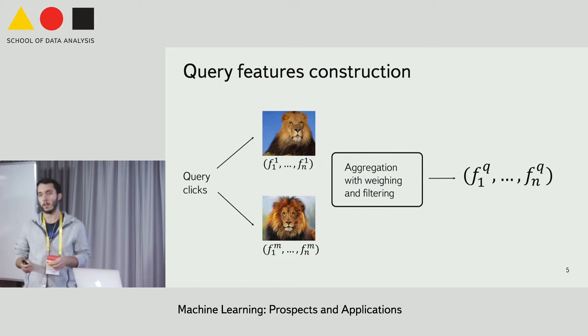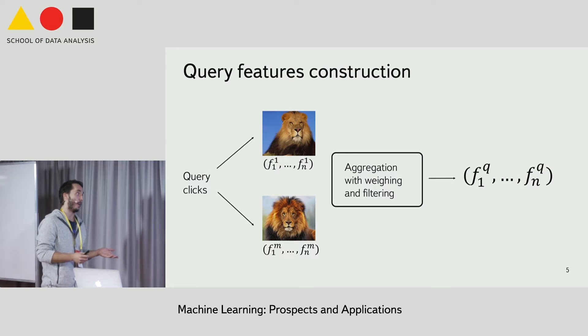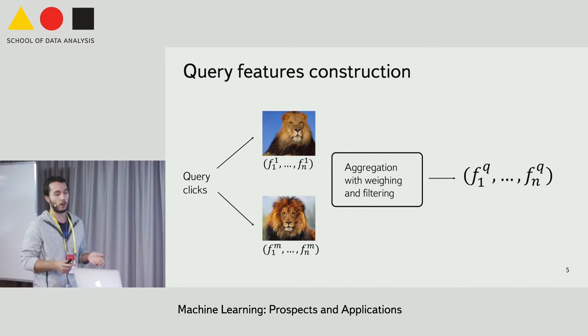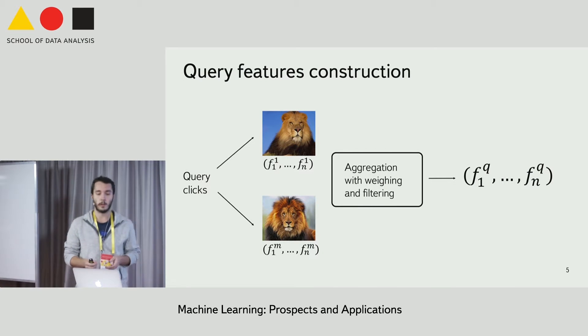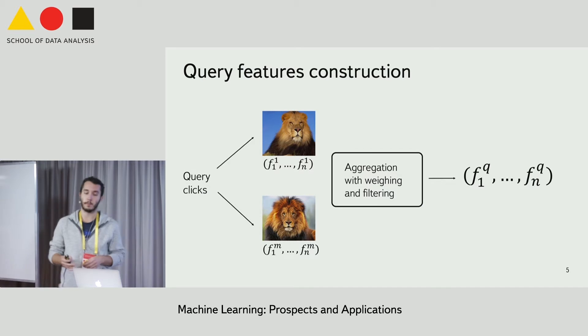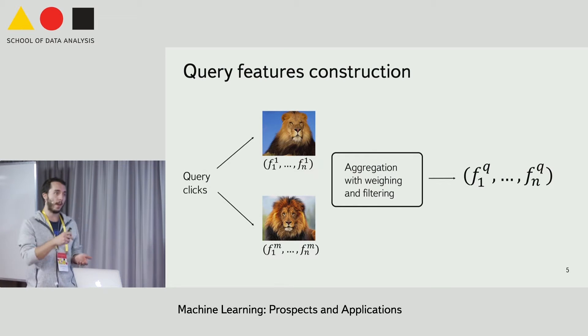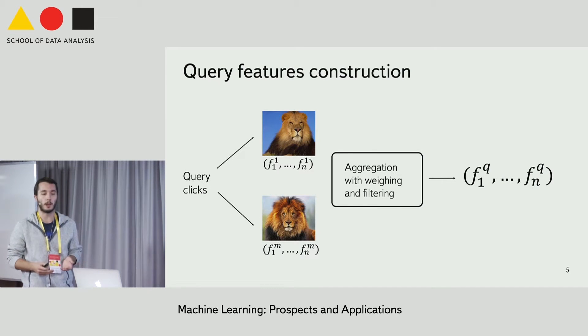So having this set of feature vectors for a query, and information about how many times users have clicked on some image and how many times this image has been shown,